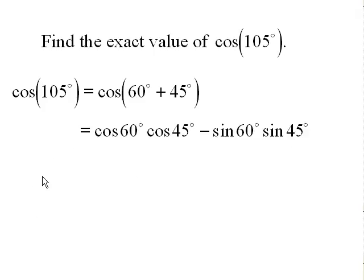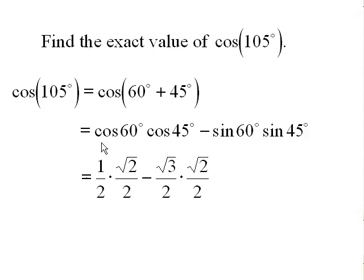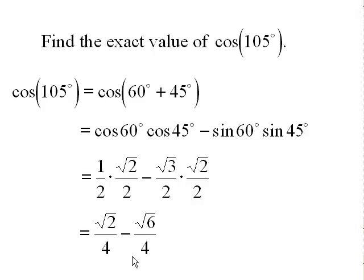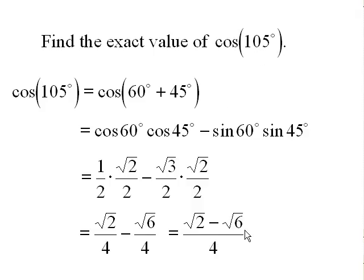You can draw a 30-60-90 triangle and an isosceles right triangle to read off these values if needed. Cosine of 60 degrees is 1/2. Cosine of 45 degrees is √2/2. Sine of 60 degrees is √3/2. Sine of 45 degrees is √2/2. Plugging in: 1/2 times √2/2 gives √2/4, and √3/2 times √2/2 gives √6/4. With common denominator 4, the answer is (√2 − √6)/4.